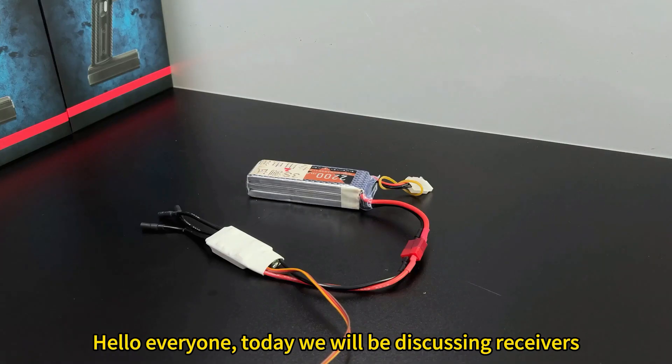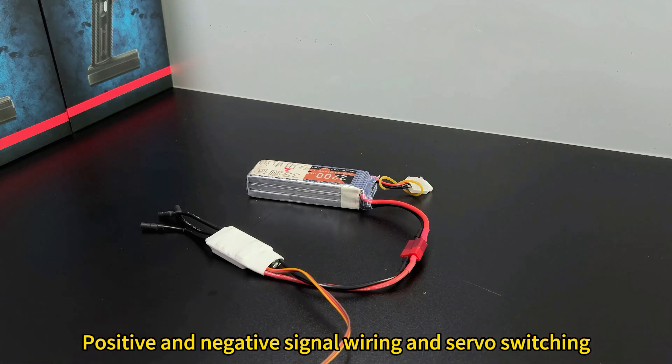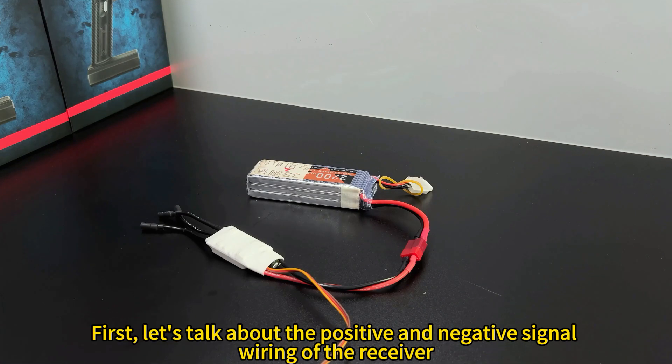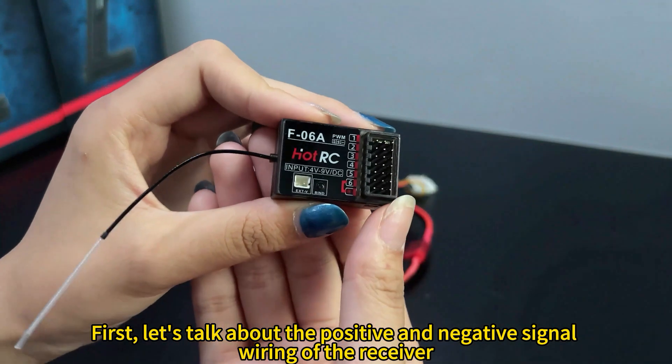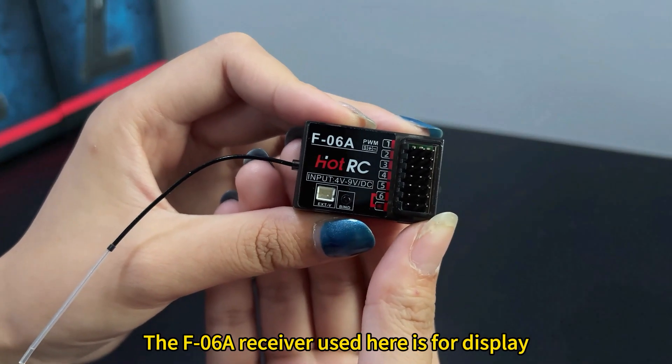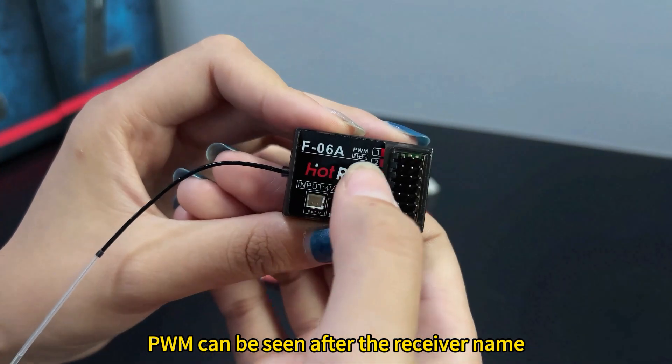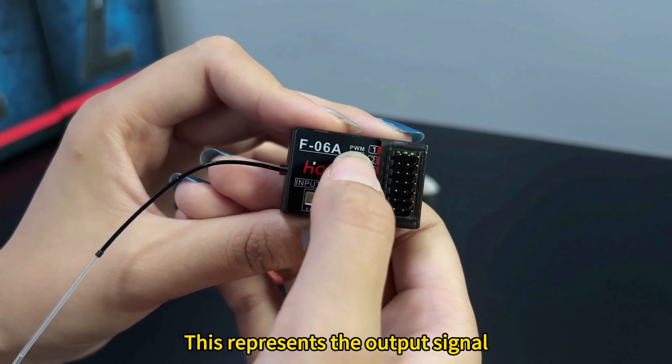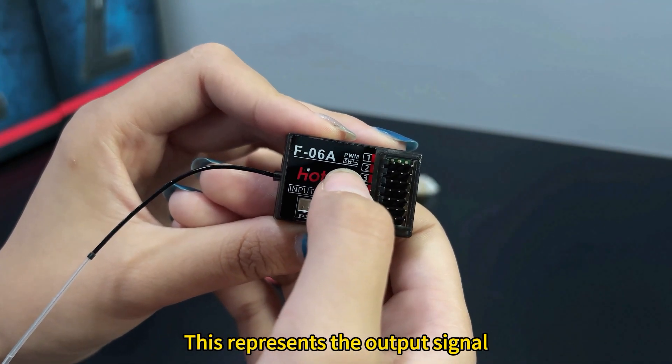Hello everyone, today we will be discussing receivers, positive and negative signal wiring in servo switching. First, let's talk about the positive and negative signal wiring of a receiver. The F-06A receiver used here is for display. PWM can be seen after the receiver name. This represents V-output signal.